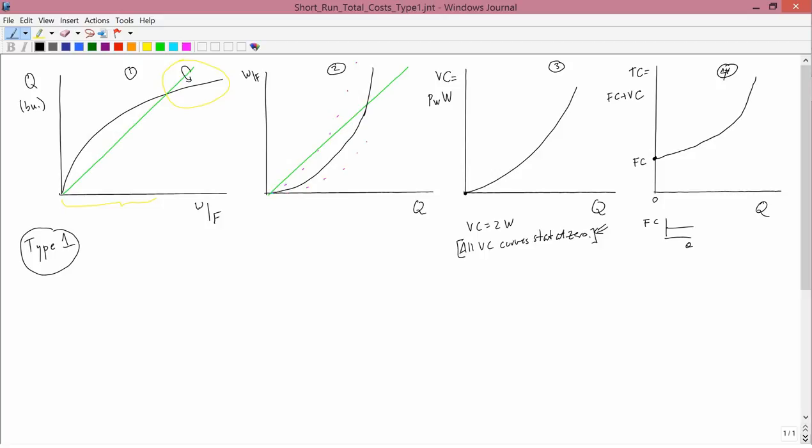It's just moved up by the amount of the fixed costs. There. So that's what total cost looks like. So we've derived the total cost curve in the short run for type 1.